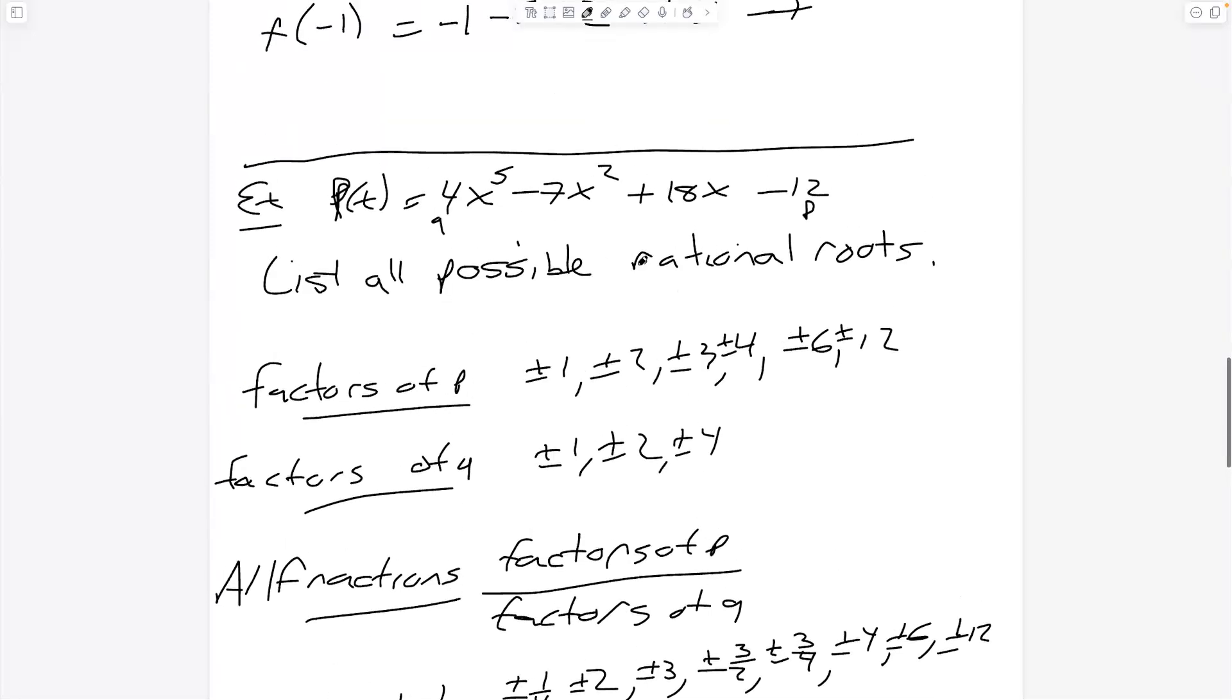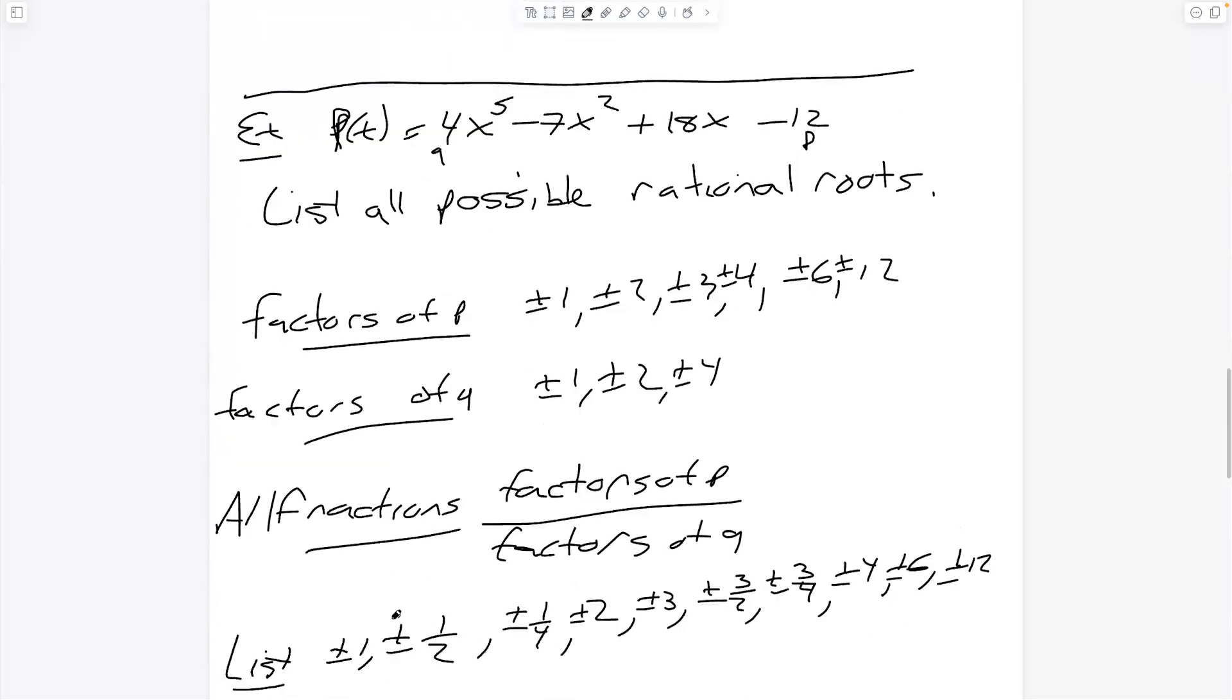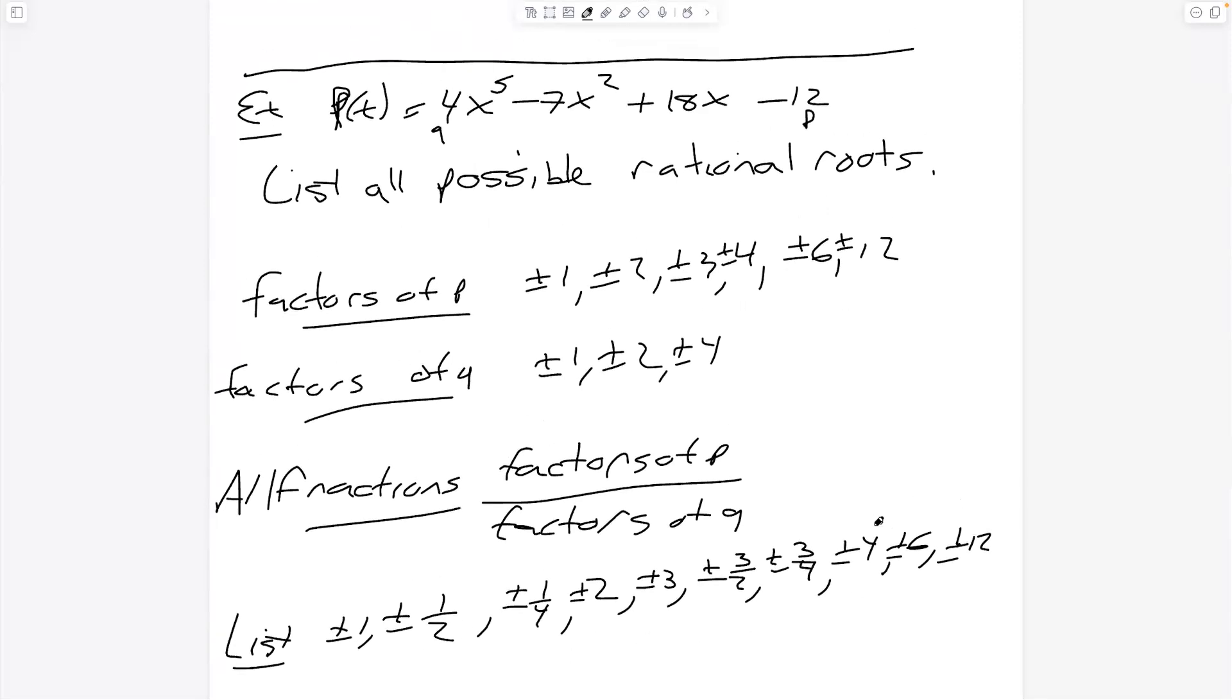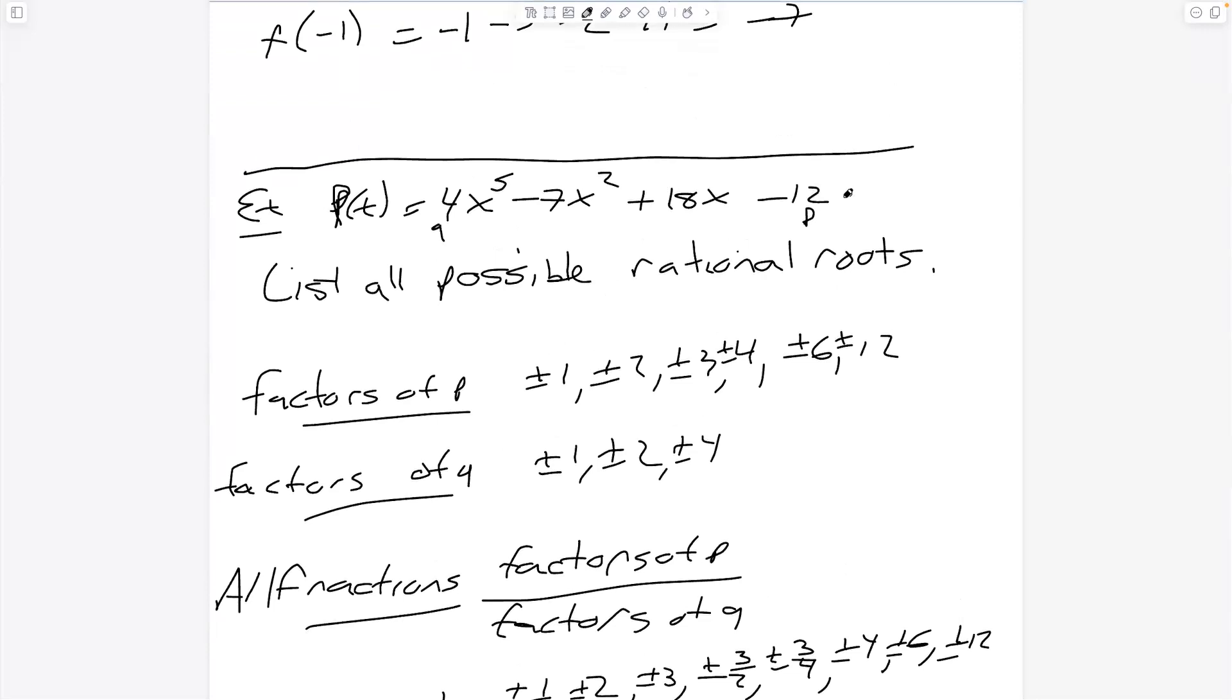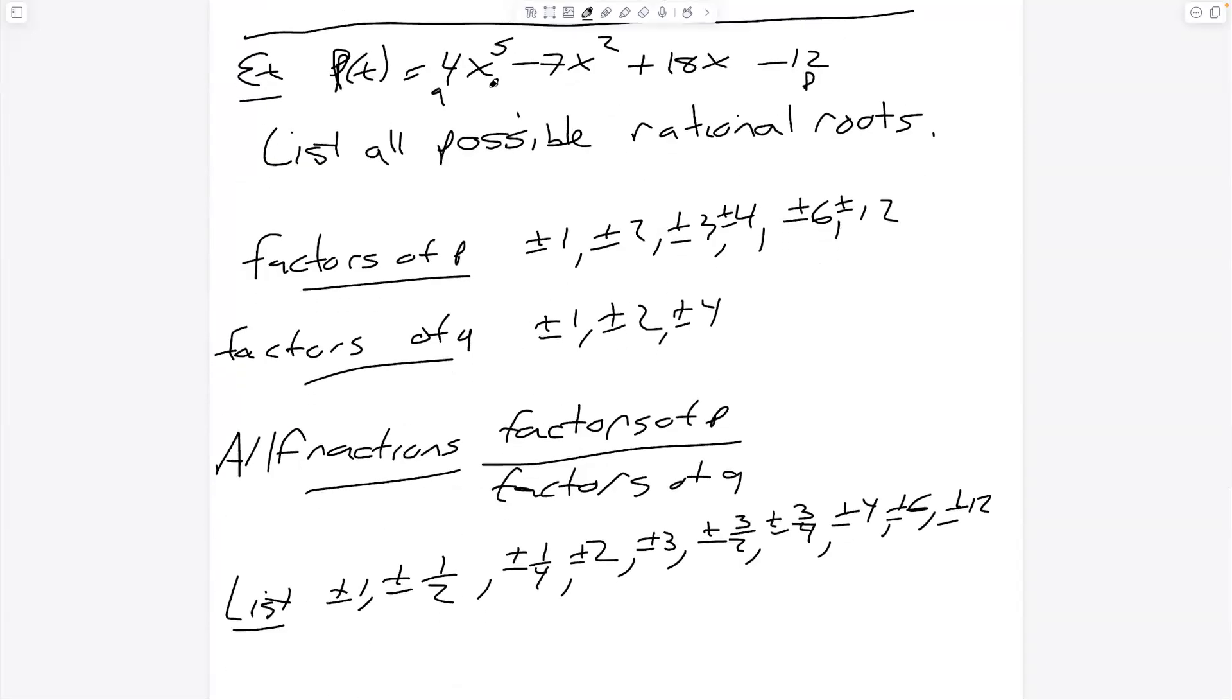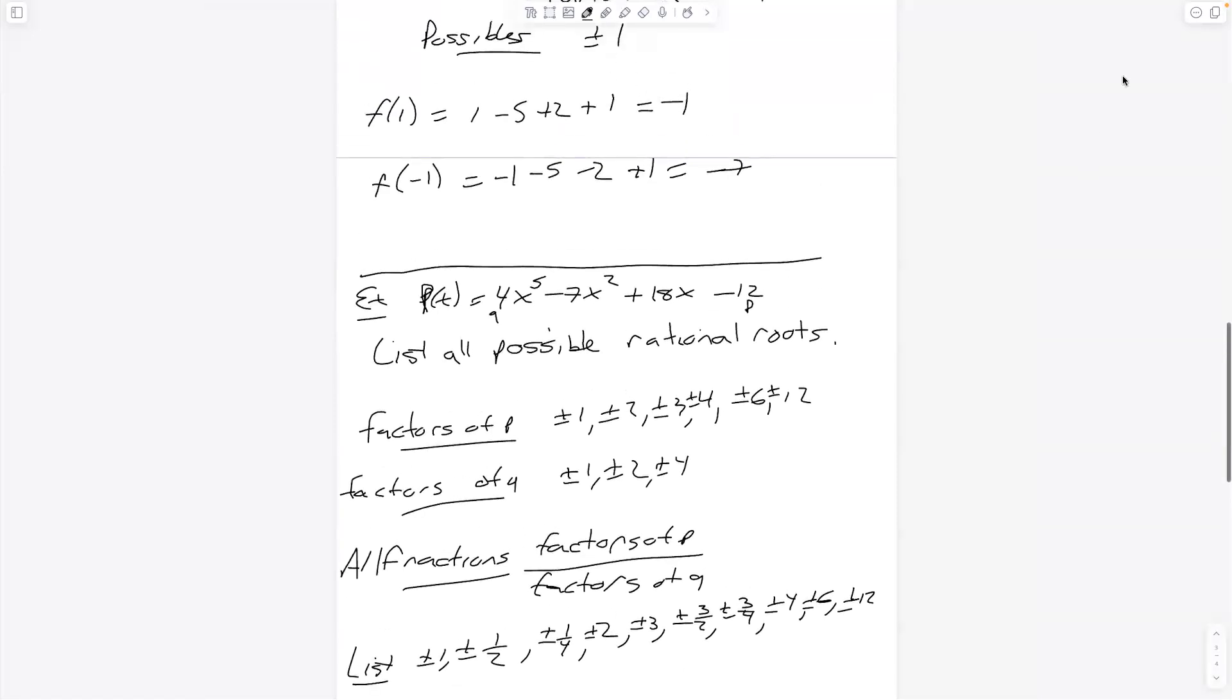So then what we would do in practice is start trying these. It's possible, always keep this in mind, it's possible out of this giant list, none of these work. I just made up a polynomial. In all likelihood, none of them work. But if we were doing a problem in this class, in a pre-calculus class, at least three of these would work. Because we would divide each one of those out one at a time until we reduced our quotient down to a quadratic, and then we'd use quadratic formula to find the last two. So we would start with one, negative one, and then so forth. We'd start with the easier ones and work our way up to the harder ones. And that's a good place to stop.